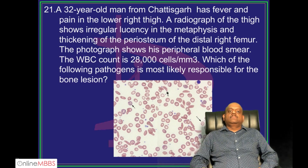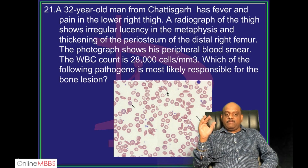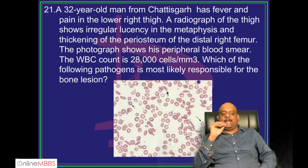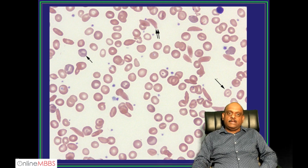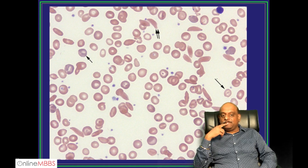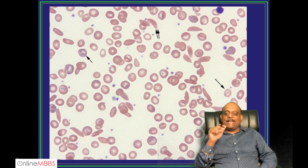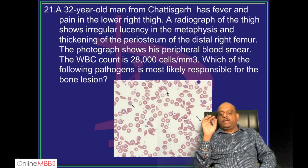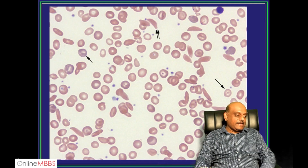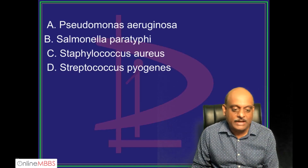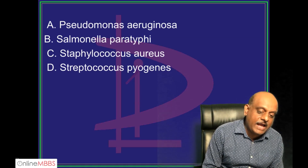A 32-year-old from Chhattisgarh is having fever and pain in the lower right thigh. Radiograph kare to irregular lucency metaphysis me dikhae. The photograph of the peripheral smear is being shown. Focus on the arrows — you'll get a clue. The WBC count is 28,000 cells — a high count. Which pathogen is most likely to cause this finding? Is it Pseudomonas? Is it Salmonella? Is it Staph or Strep?